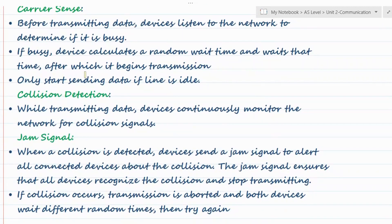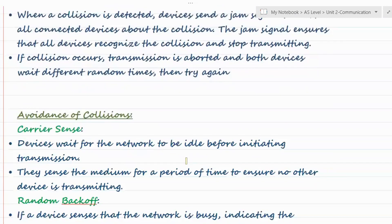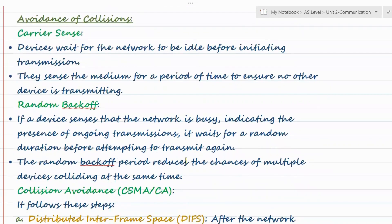So that is CSMA/CD: first, the carrier is sensed; after checking that the line is idle, transmission begins; while transmitting, they continuously check for collision signals; if a collision signal is received, a jam signal is sent across the whole network; all transmitting parties stop sending; both the sender and receiver wait for a random amount of time — different for each system — and then start transmitting again.